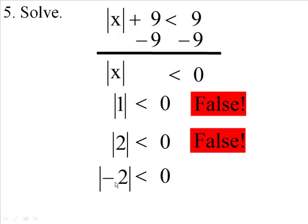How about a negative? This might work. Let's see. The absolute value of a negative is a what? The absolute value of negative 2 is plus 2. Is that less than 0?